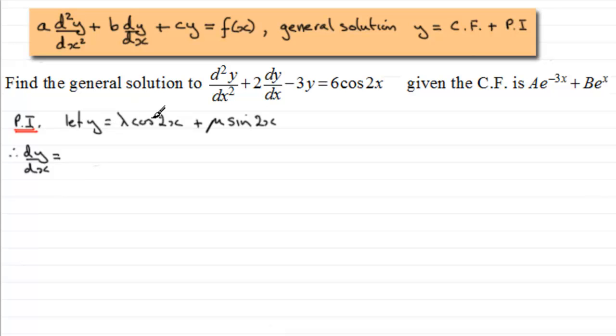So for this one if we differentiate y with respect to x, for this first term here we're going to get minus 2 lambda sin2x. And then when we differentiate the second term here with respect to x, we're going to get plus 2 mu cos2x. So that's dy/dx.